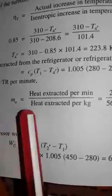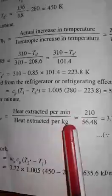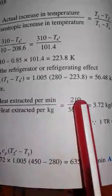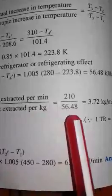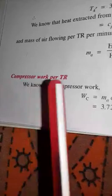The mass of air flowing per ton of refrigeration (ma) is calculated as: ma = heat extracted per minute / heat extracted per kg. The standard heat extracted per minute for one ton of refrigeration is 210 kJ/min. Dividing by 56.48 kJ/kg, we get ma = 3.73 kg/min. The compressor work is given by Wc = ma × Cp × (T2-dash − T1).